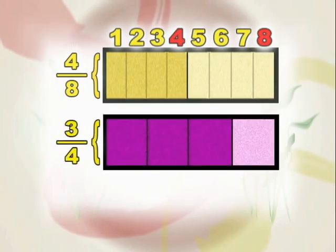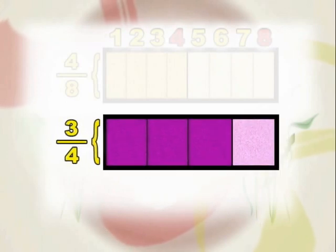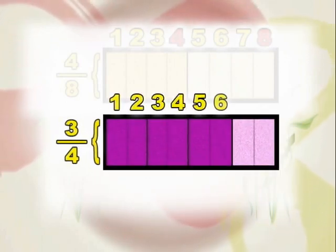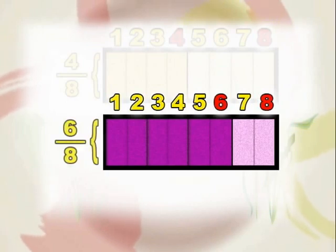If we do the same for our paper showing three-fourths, we can see that three-fourths is equal to six shaded areas of the strip of paper divided into eight equal parts. This means that three-fourths is equal to six-eighths.